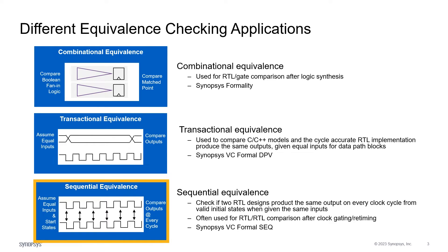Sequential equivalence checking is used to compare two RTL designs written in synthesizable SystemVerilog or VHDL. It checks if the two RTL designs produce the same output on every clock cycle from valid initial states, given the same inputs. Sequential equivalence is checked on a cycle-by-cycle basis, and it's a specialized application of formal property verification. VC Formal Seq is an example of this application.